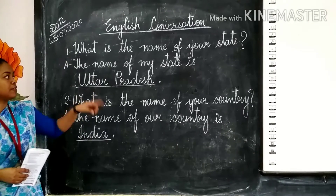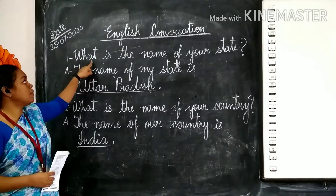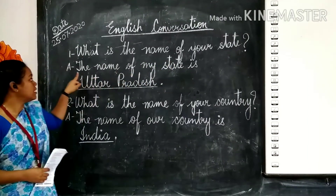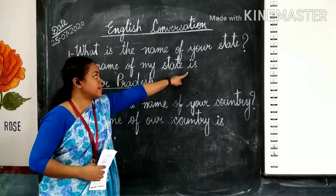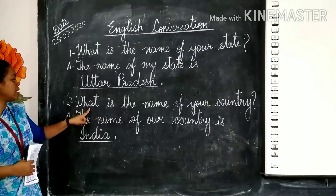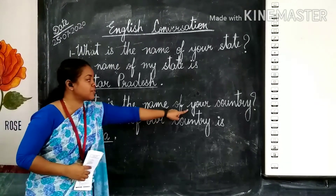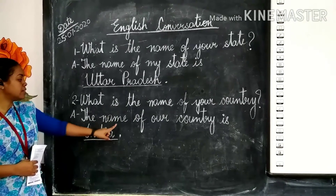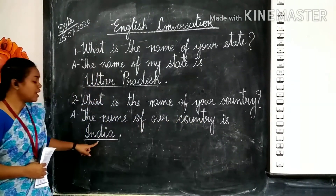So we will revise once again. Question number one: what is the name of your state? Answer: the name of my state is Uttar Pradesh. Second question: what is the name of your country? Answer: the name of our country is India.